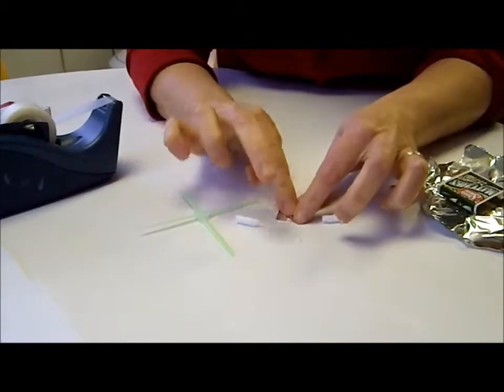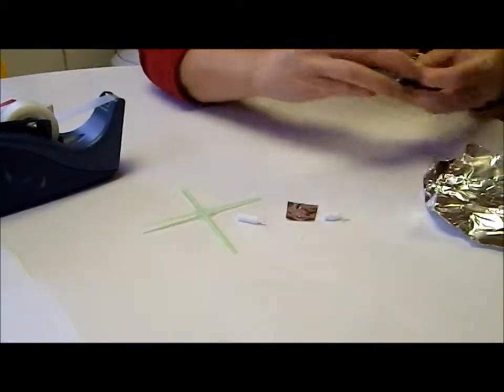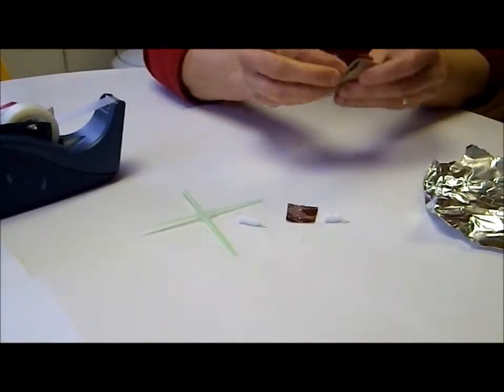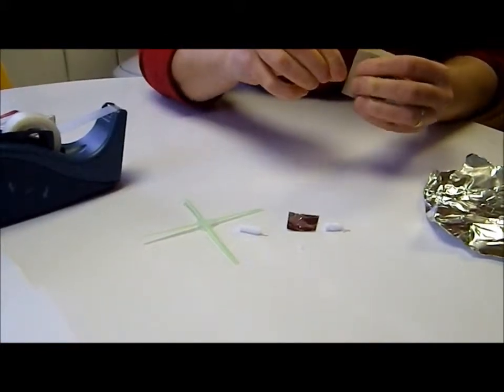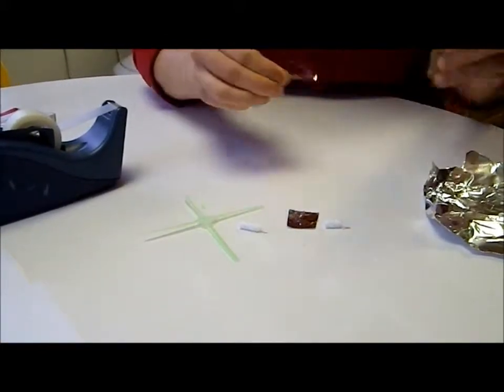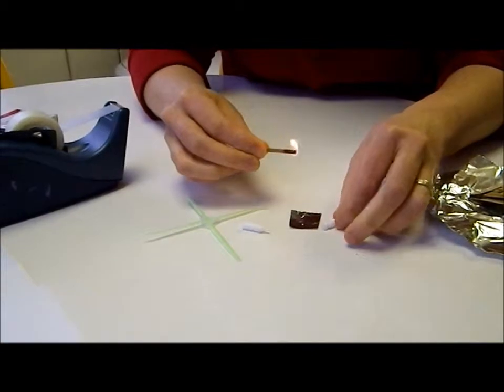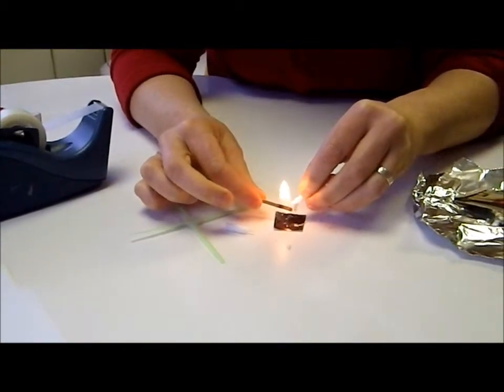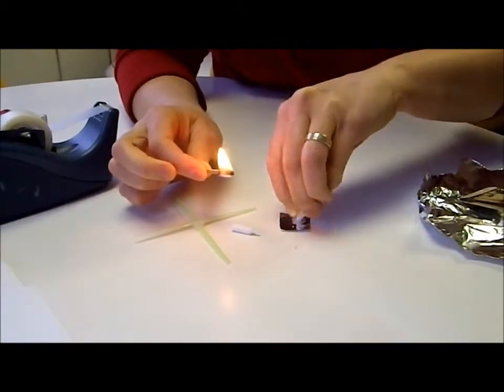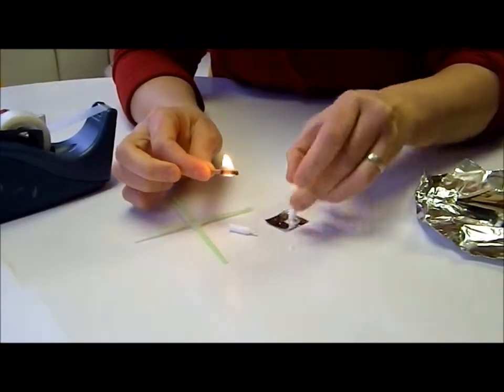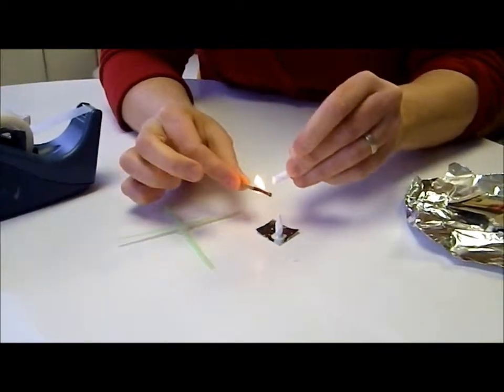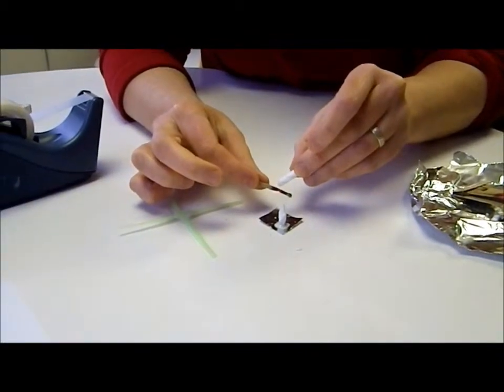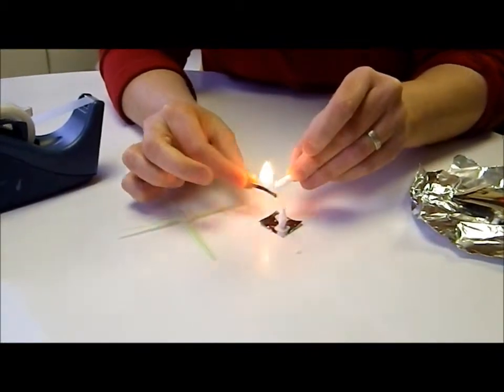And then I just want to basically put the candles onto the piece of tin foil. So I'm going to melt them on just by heating the bottom. Okay, so basically get the bottom of the candle drippy. Here's the first one. And then do the same thing to the other one. Bottom of the candle needs to be dripping.